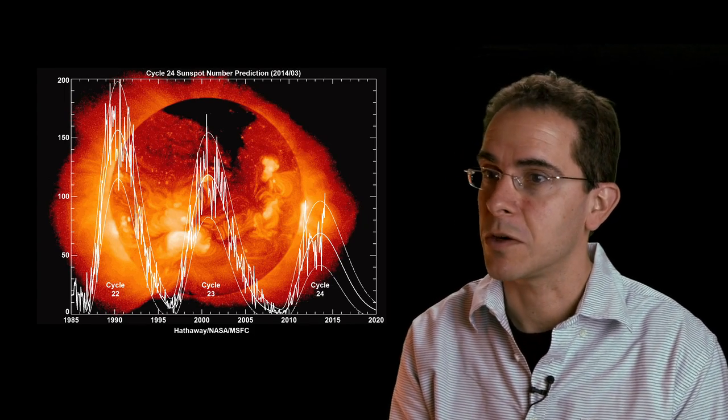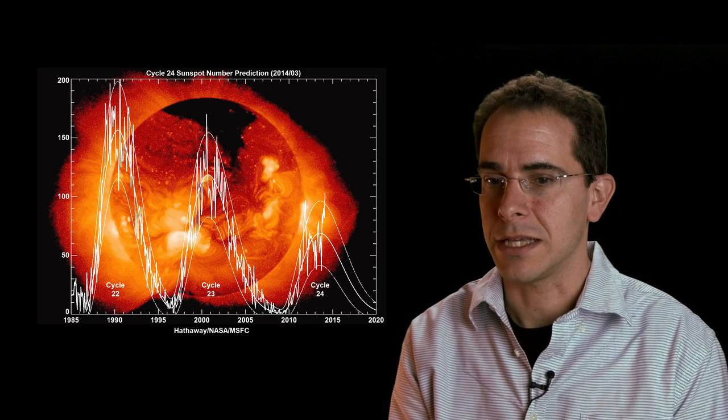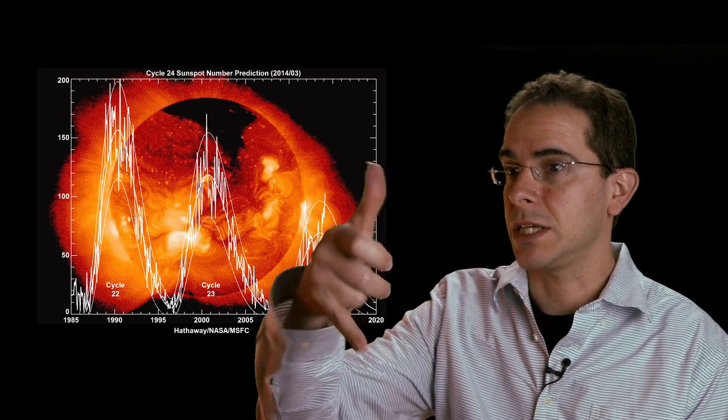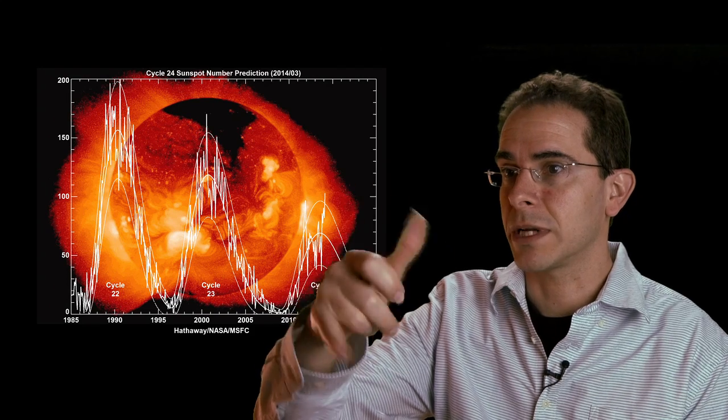Most people heard of the 11-year solar cycle, which is a cycle of about 11 years over which the polarity of the North and South magnetic poles switch.